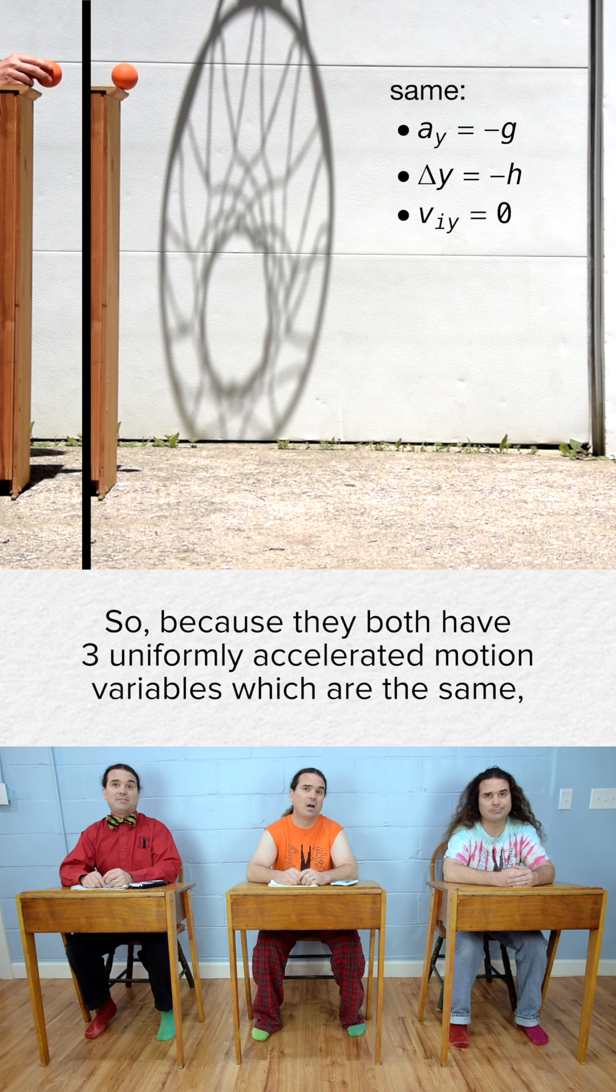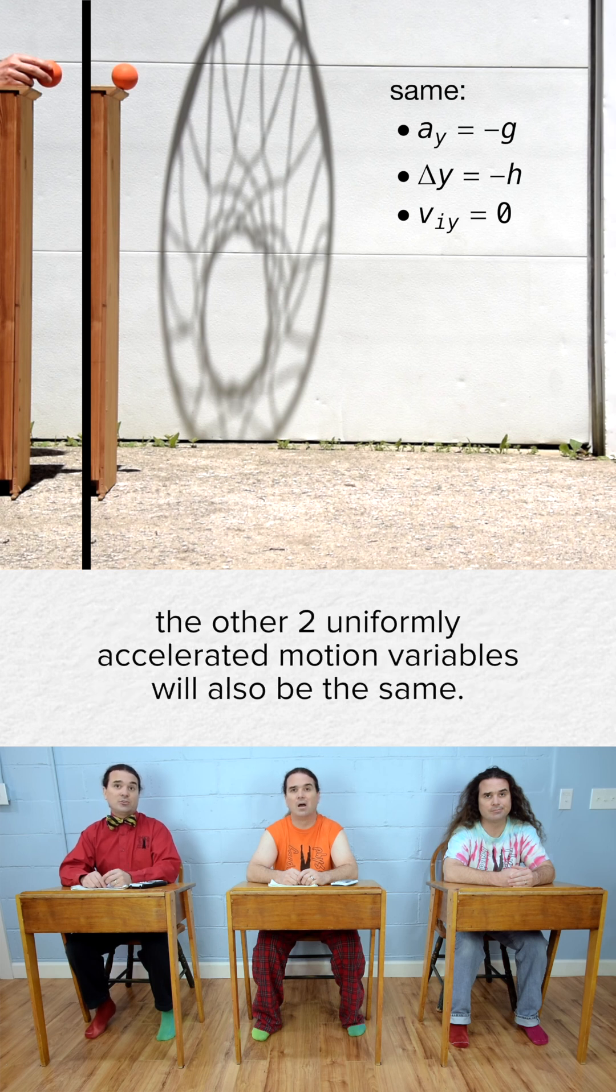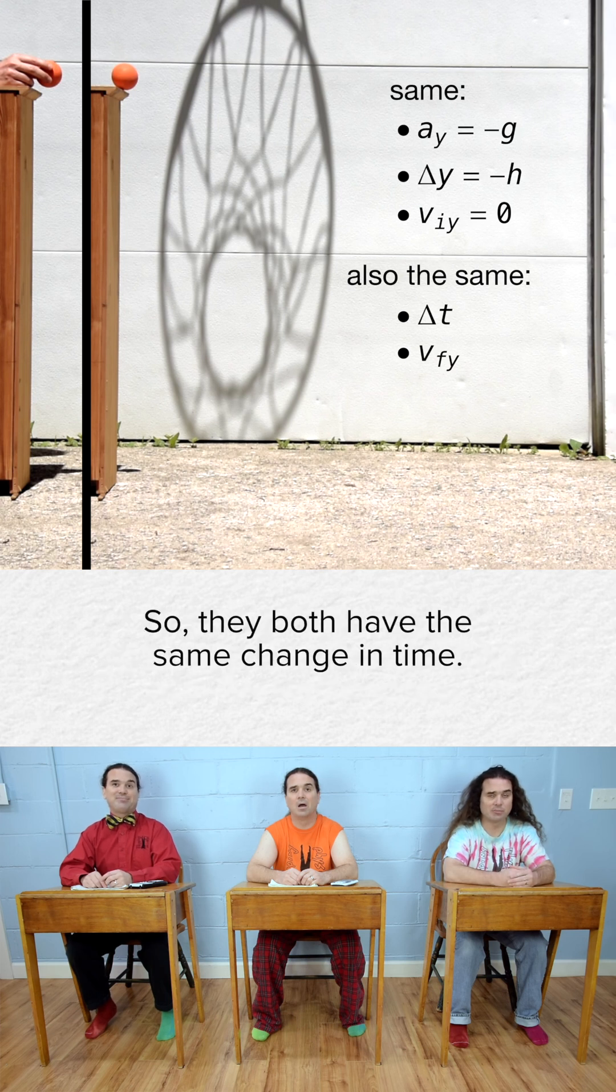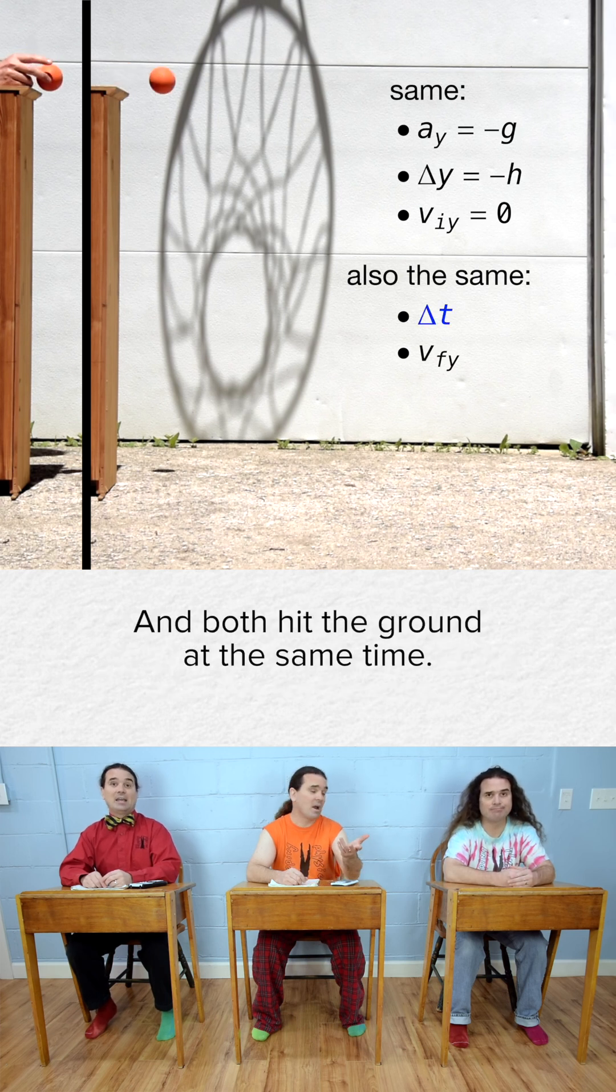So because they both have three uniformly accelerated motion variables which are the same, the other two uniformly accelerated motion variables will also be the same. So they both have the same change in time, and both hit the ground at the same time.